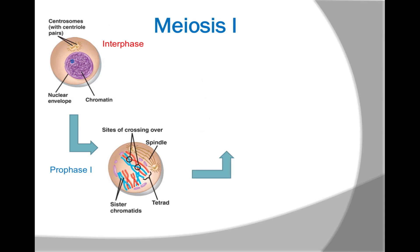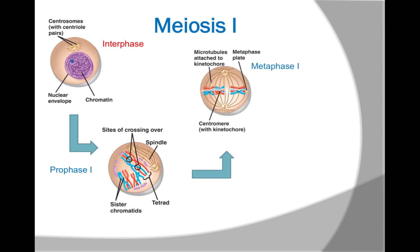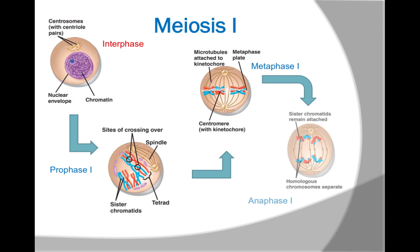Metaphase I: the chromosome tetrads are aligned on the metaphase plate. Spindle microtubules are attached to the kinetochores at the centromeres. Anaphase I of meiosis is marked by the migration of chromosomes toward the two poles of the cell. However, the sister chromatids making up each double chromosome remain attached to their centromere. Only the tetrads split up.